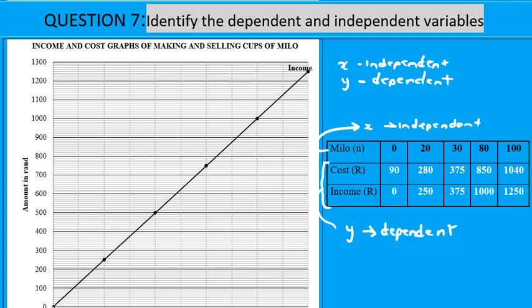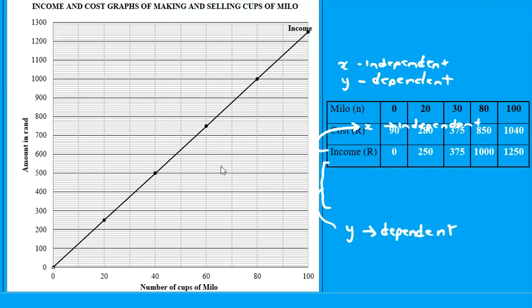And from the graph, remember these are the x-axis and those are the y-axis. We said x is always independent, so on this side the number of cups are independent.